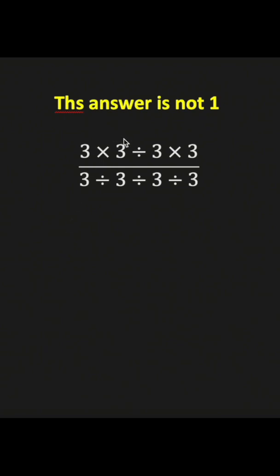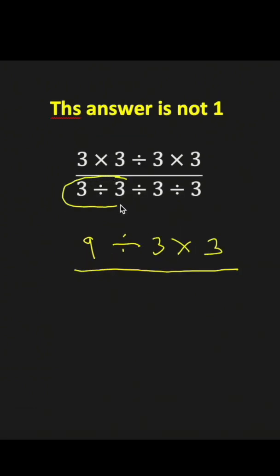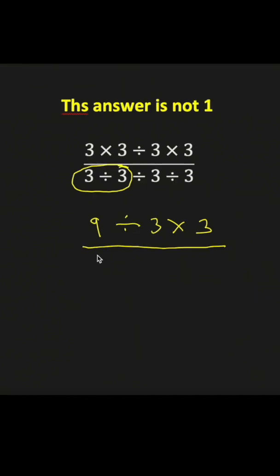First, for the numerator, we'll evaluate 3 times 3. Next, for the denominator, 3 divided by 3 and rewrite.